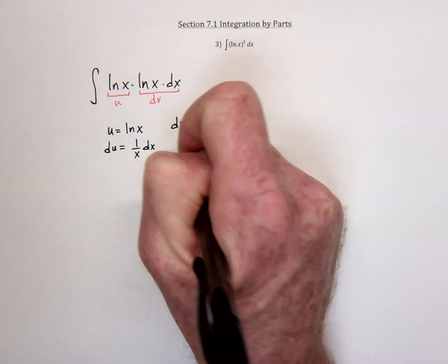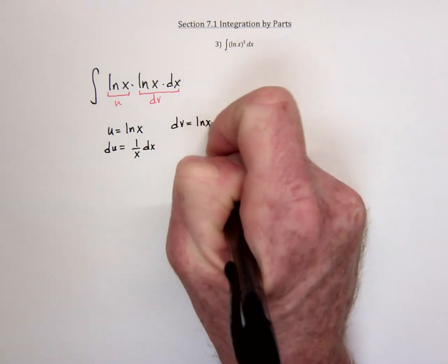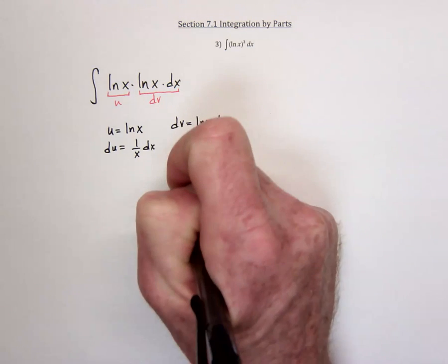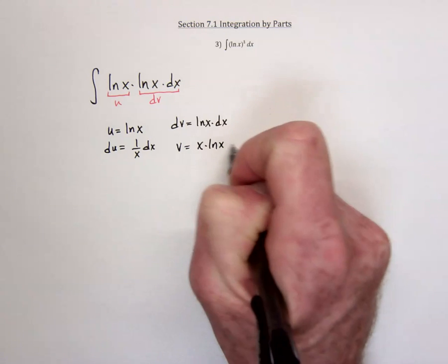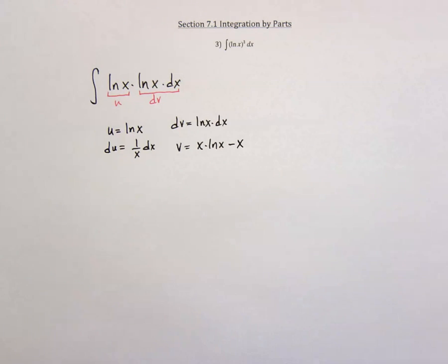Over here, as I've just said, you need to be able to integrate natural log of x by itself. So the v is going to be x, the natural log of x minus x. And the plus c will come in at the very last step.